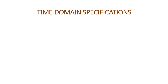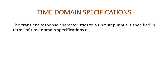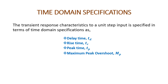Time domain specifications. These are the parameters that we use to analyze the system in the time domain. The transient response characteristics to a unit step input is specified in terms of time domain specifications as delay time, rise time, peak time, maximum peak overshoot, and settling time. These are the five parameters or specifications that we use to analyze our system when the input is unit step.